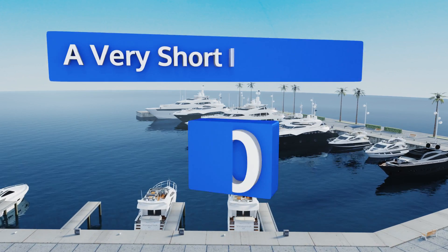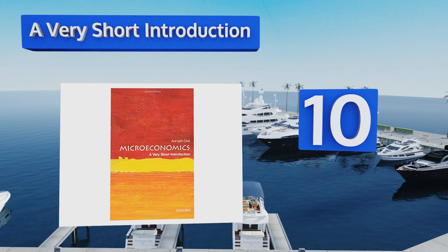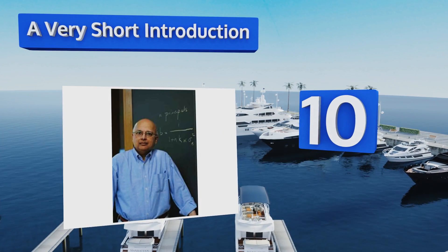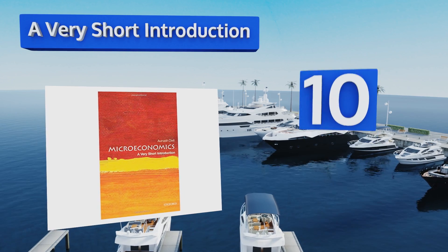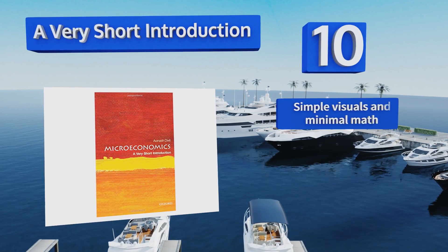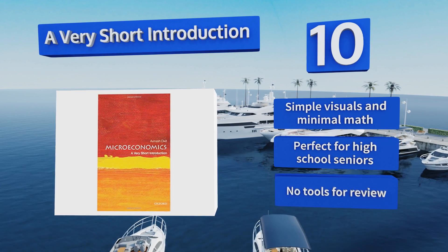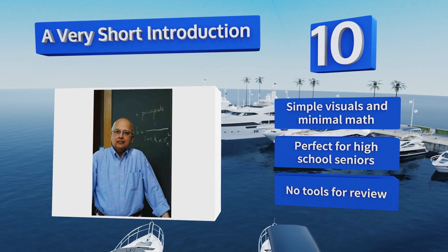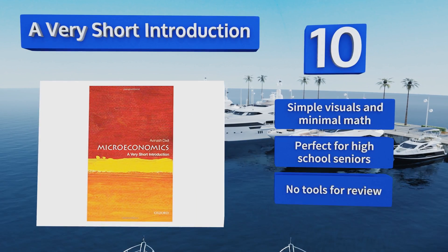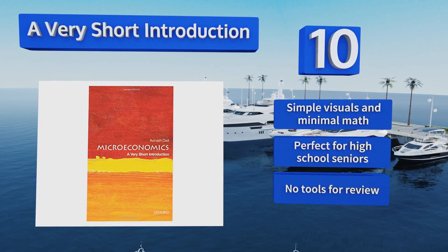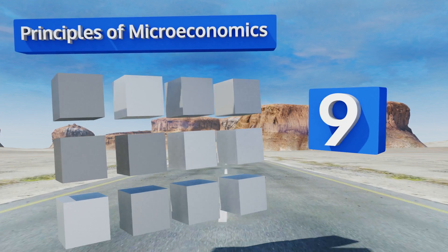Starting off our list at number 10, although it's not suitable as a primary source, Oxford University's A Very Short Introduction will get newbies up to speed on particular economic behaviors, arming them with the confidence to enter their first class or hold their own in a conversation on the subject. It uses simple visuals and minimal math and is perfect for high school seniors. However, there are no tools for review.